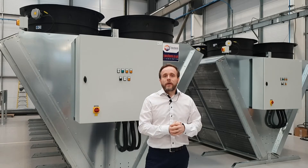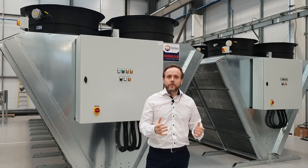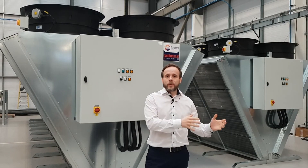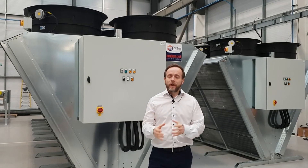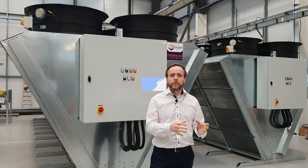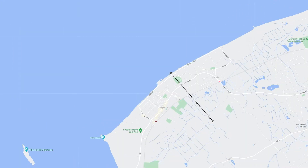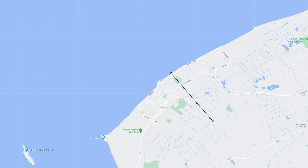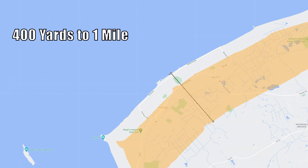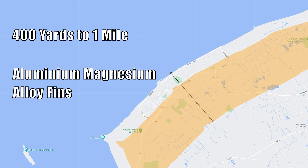The second thing that's really important about site location is materials of construction. If we are putting a piece of equipment close to the coast or in a corrosive atmosphere of one form or another, we have to make sure the build materials are the correct ones. Generally speaking, if we're further than a mile from the coast we can use standard materials — copper tubes, aluminium fins, and galvanised casework. If we're between 400 yards and a mile from the coast, there's a mild upgrade where we use an aluminium-magnesium alloy fin, which has great protection in semi-coastal applications.